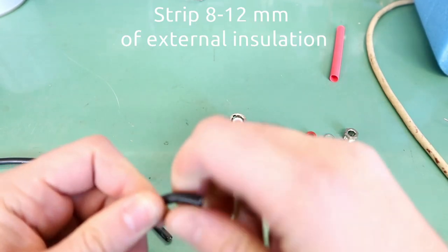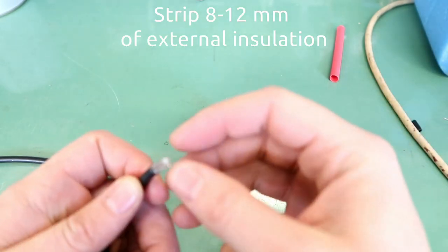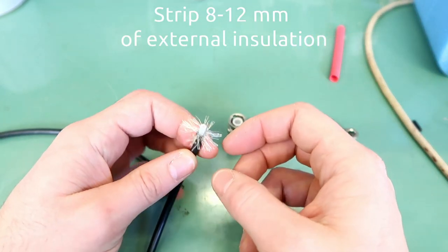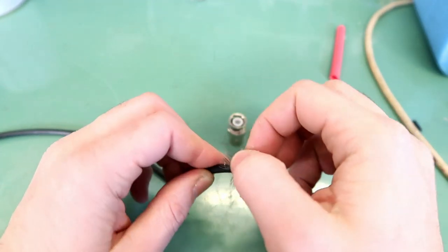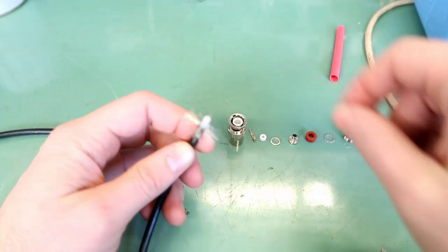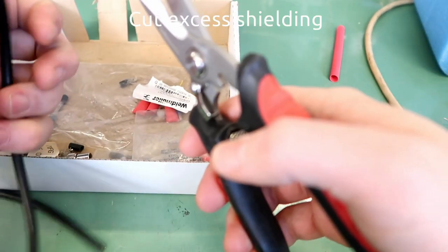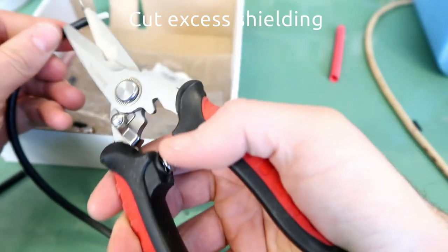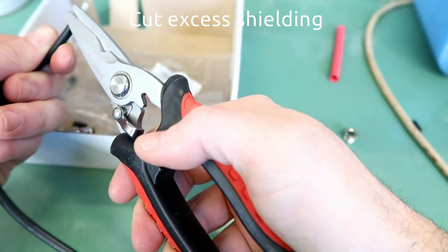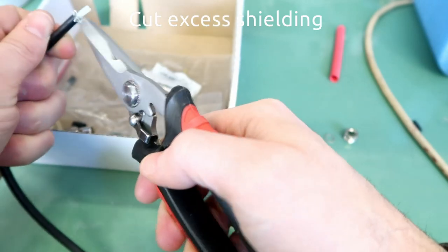First strip 8-12mm of external insulation. Spread the shielding so that you will trim it off easier later. Cut off excess shielding as much as you can.